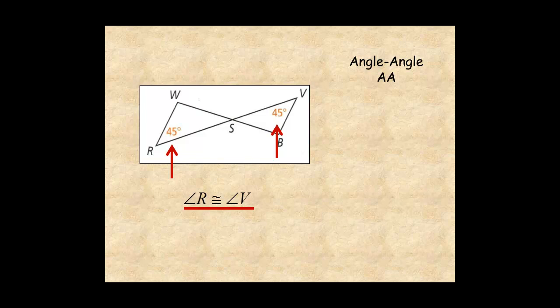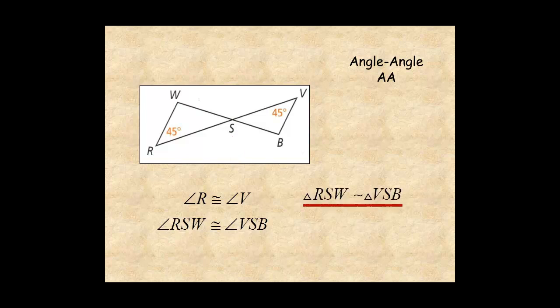The angles at point S are vertical angles, so they are congruent. Since the triangles have pairs of congruent angles, they are similar by angle-angle similarity.